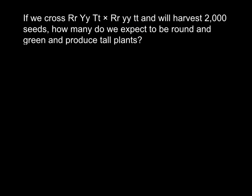First we have to start by analyzing our problem and question. Here we have the genotype of parent one (P1) and the genotype of parent two. We also ask what genotype of the progeny is going to produce round seeds. We can get round seeds whether the genotype is capital R capital R, or capital R small r — both these genotypes would produce phenotypically round seeds.